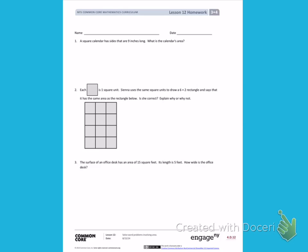There is some important information in this problem that helps me to draw a picture. I know that the calendar is a square, and I know that one side of the calendar is 9 inches long. So I'm going to start by drawing a square.